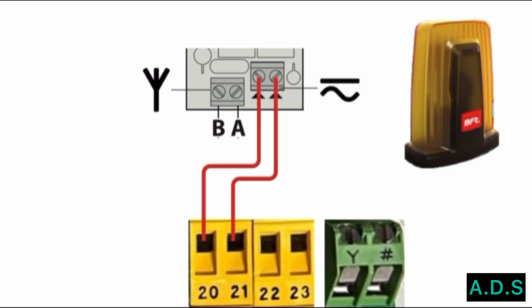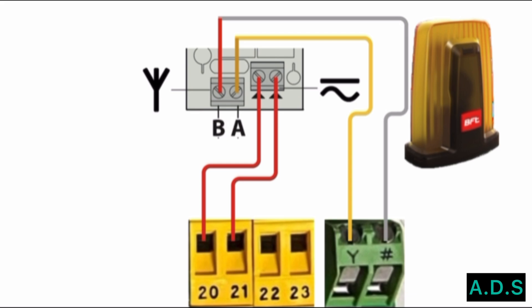Connect the antenna in the block. The yellow wire is the signal wire of the antenna. The gray wire is the ground for the antenna.